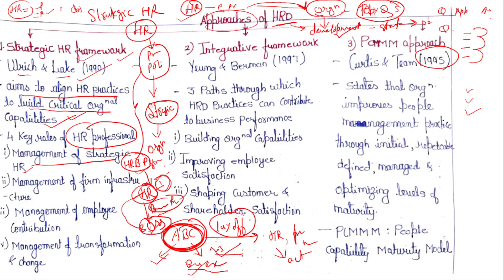The HR business partner's job is to do alignment — whatever functions and practices are carried out, they are done as per the business. If there is any issue, they act as a mediator and resolve the problem. That is management of strategic HR. Second is management of firm infrastructure — HR is considered a facilitator and resource allocator. Firm infrastructure means making sure that whatever policies are framed and practices are being done, the infrastructure the firm has is actually supportive of the organizational strategy.